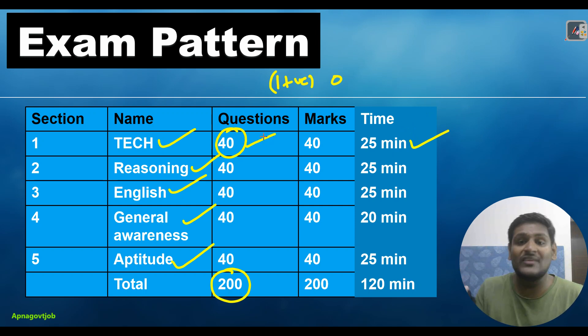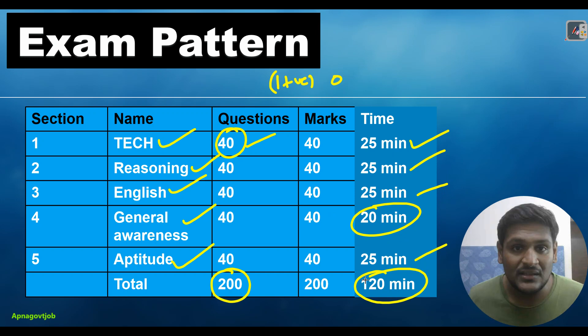After that, the section will shift and a new section will start. You will get 25 minutes for reasoning, 25 minutes for English, 25 minutes for aptitude, and only 20 minutes for general awareness, which is enough time. So the total timing will be 120 minutes to attempt 200 questions.